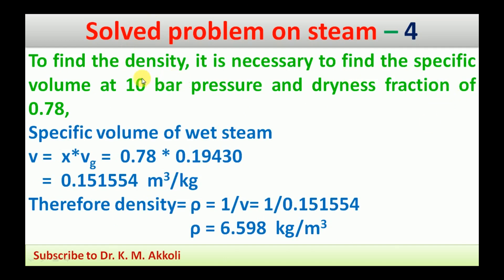For the initial state, we need to find the density. First, we find the specific volume of the wet steam: V = x × Vg = 0.78 × 0.19430 = 0.151554 m³/kg. Therefore, density = 1 / V = 1 / 0.151554 = 6.598 kg/m³. This completes the density determination for the initial state.